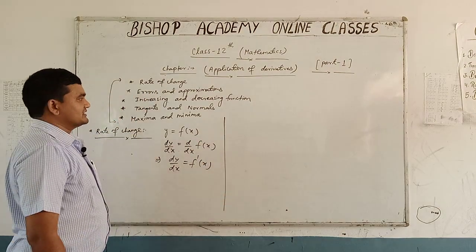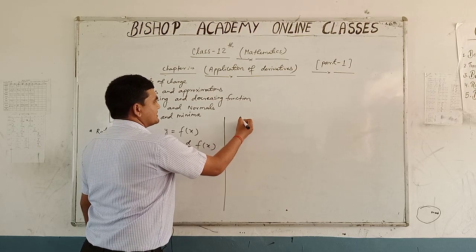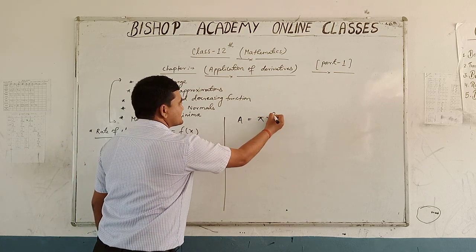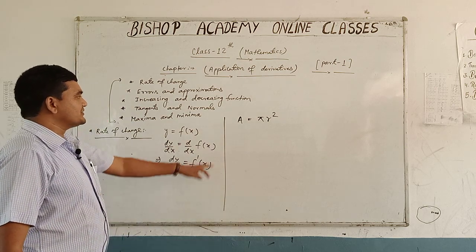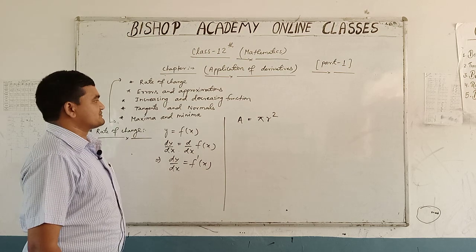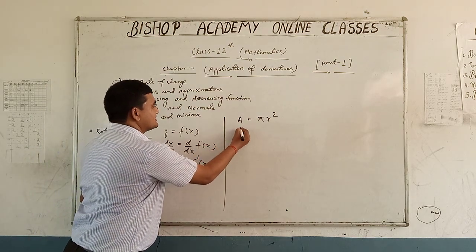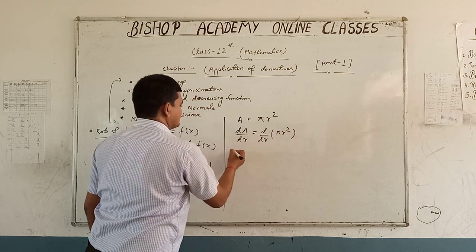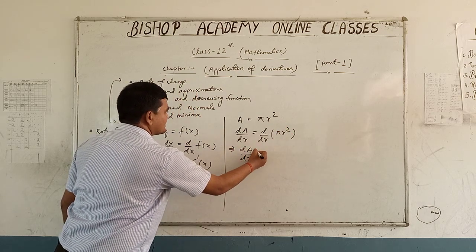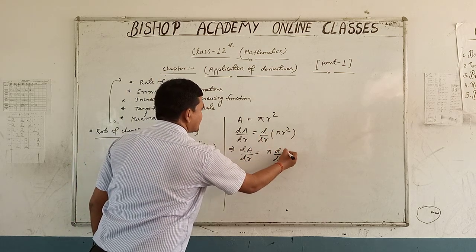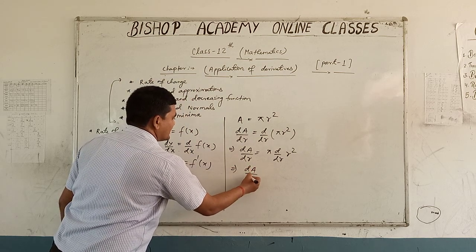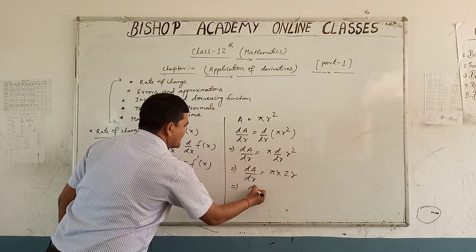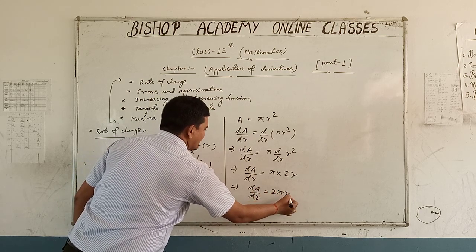Again, if we represent the area of a circle by A and radius of the circle by r, then area A is equal to pi r squared. And if we find the rate of change of this area with respect to radius, it is given by dA upon dr, which equals d upon dr of pi r squared. This implies dA upon dr is equal to pi into 2r.